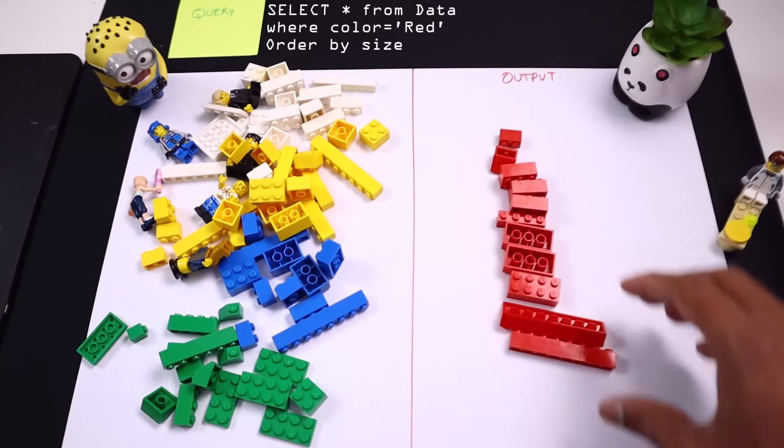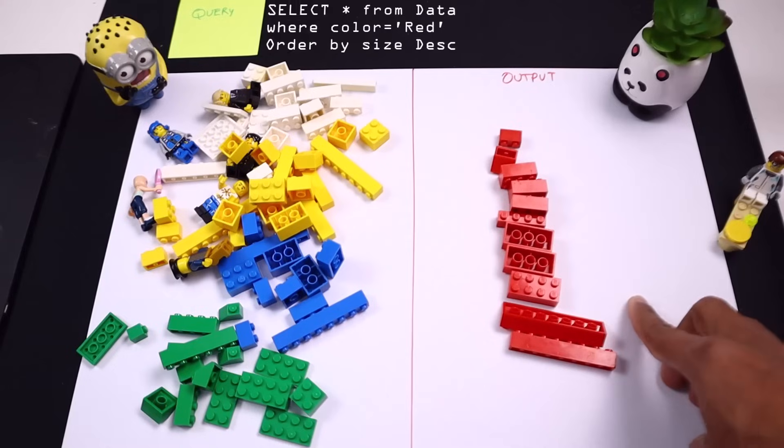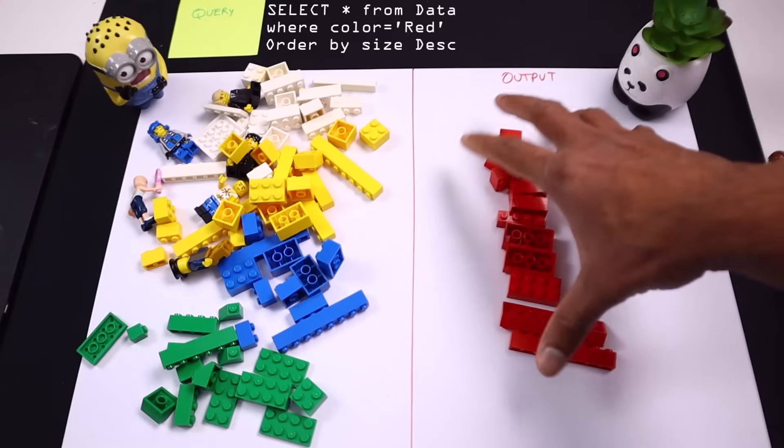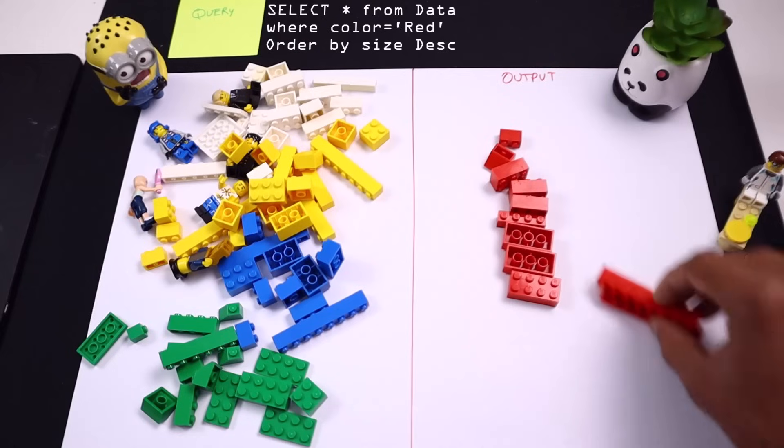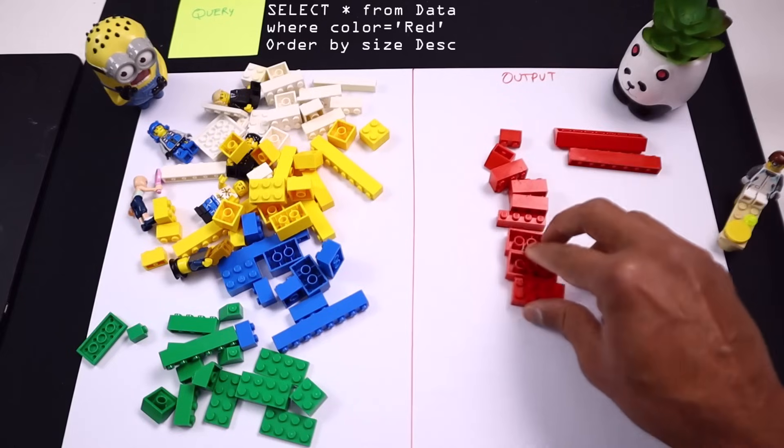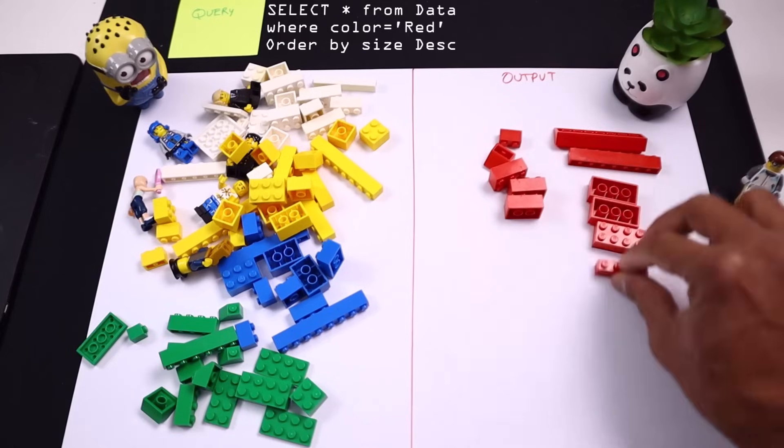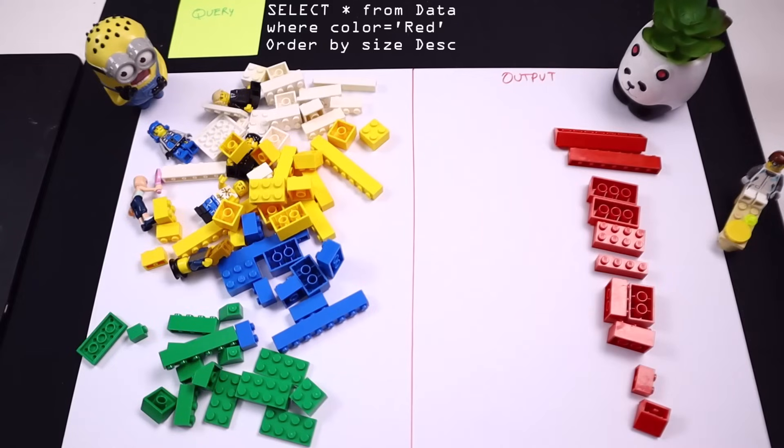The default ordering would be ascending order. But if you don't like this, you can also say select star from data where color is red order by size DESC. And then what that will do is it will kind of flip this data into descending order.